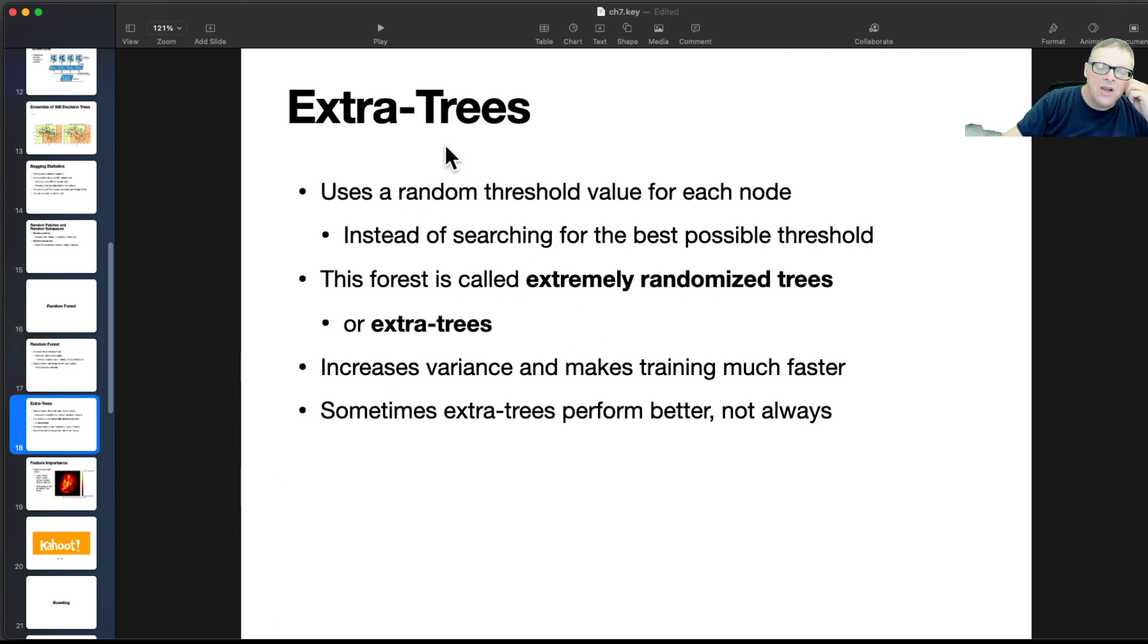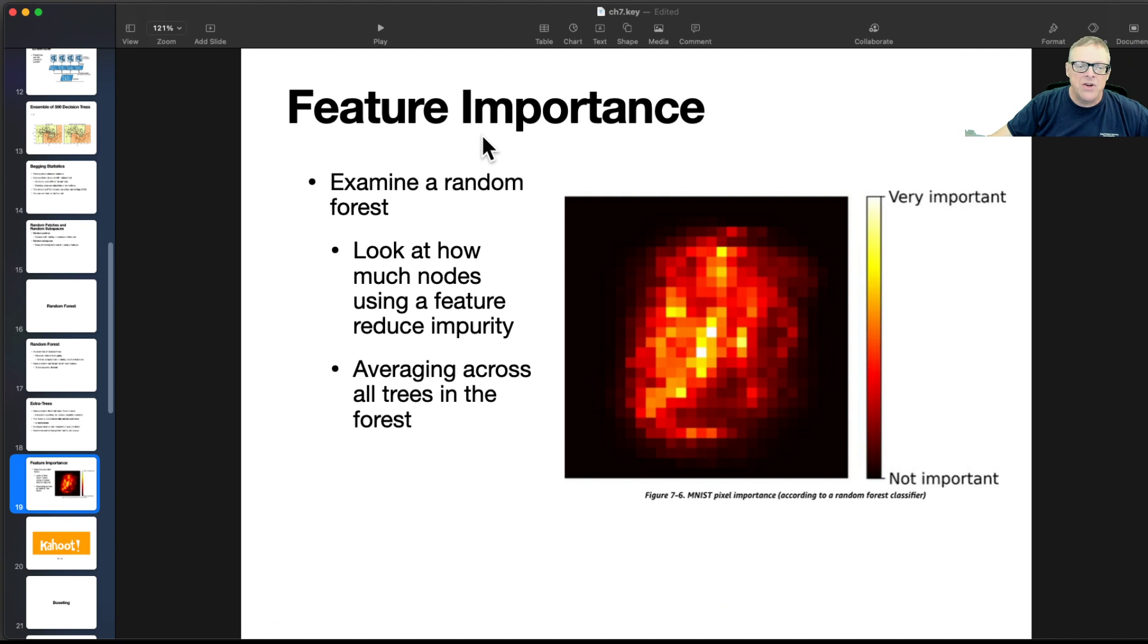And then you have extra trees. This is a way to make them even more randomized, extremely randomized. So what you do is you use a random threshold value for each node instead of searching for the best possible threshold, and this increases variance, but it makes training much faster because you don't have to go through a grid search at each step to find the optimal threshold. And so sometimes it performs better, not always.